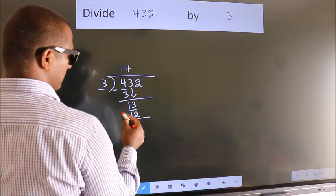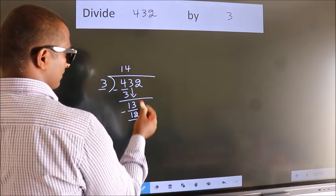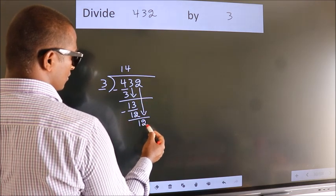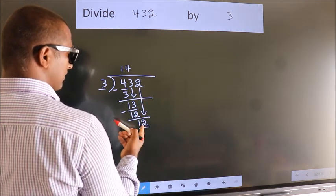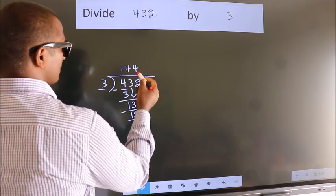Now, we subtract. We get 1. After this, bring down the beside number. So, 2 down. So, 12. When do we get 12? In 3 table. 3 fours, 12.